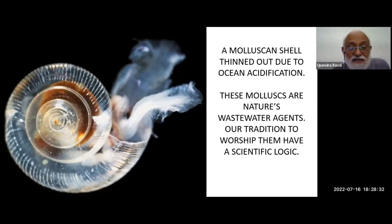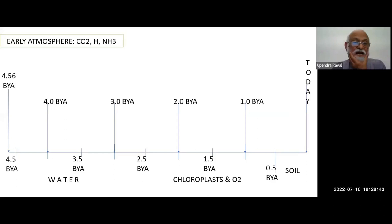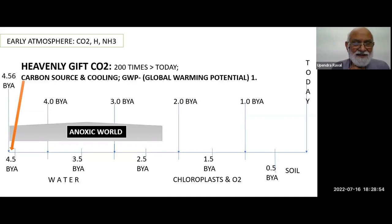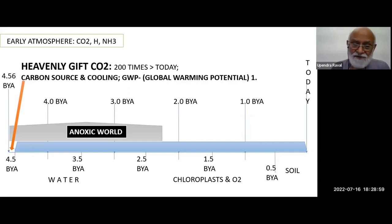Ocean acidification — the smallest are nature's wastewater agents. One 3-inch oyster can treat 2,000–4,000 liters of wastewater per hour. You can imagine millions of them employed. Professor Sandra Postel is working on this in her river rejuvenation work. This is a horizontal scale showing the age of the earth.